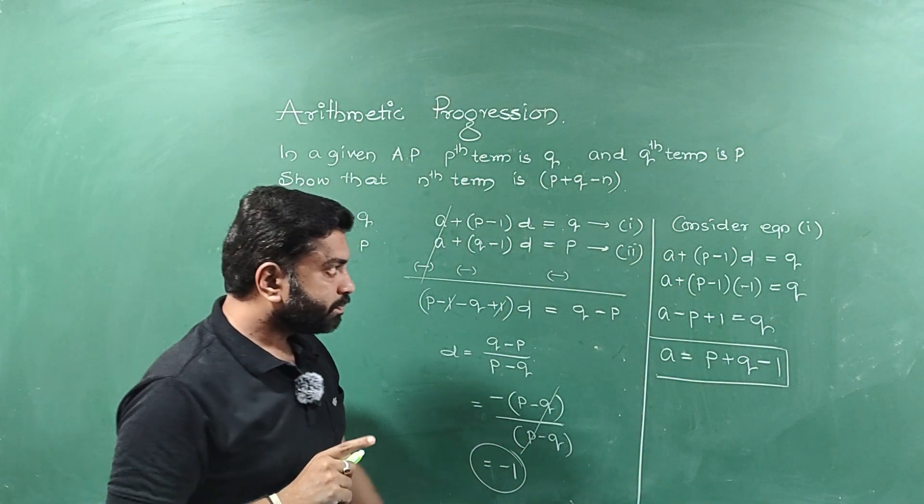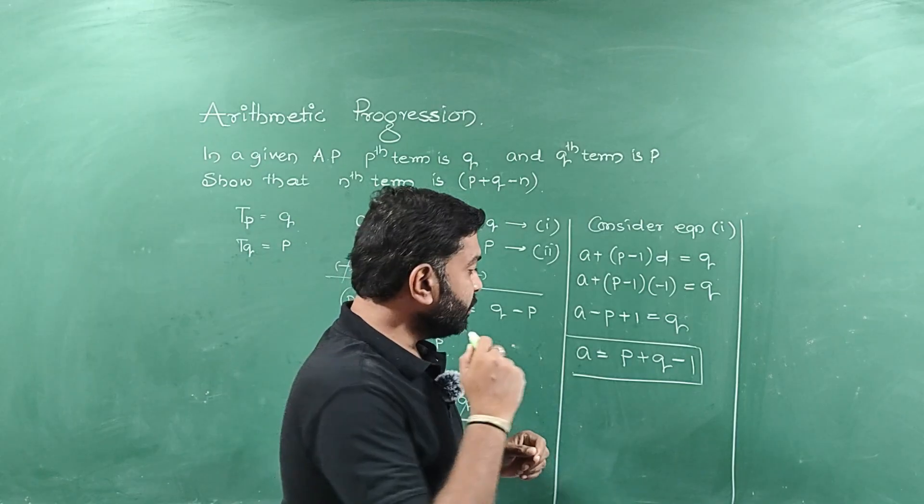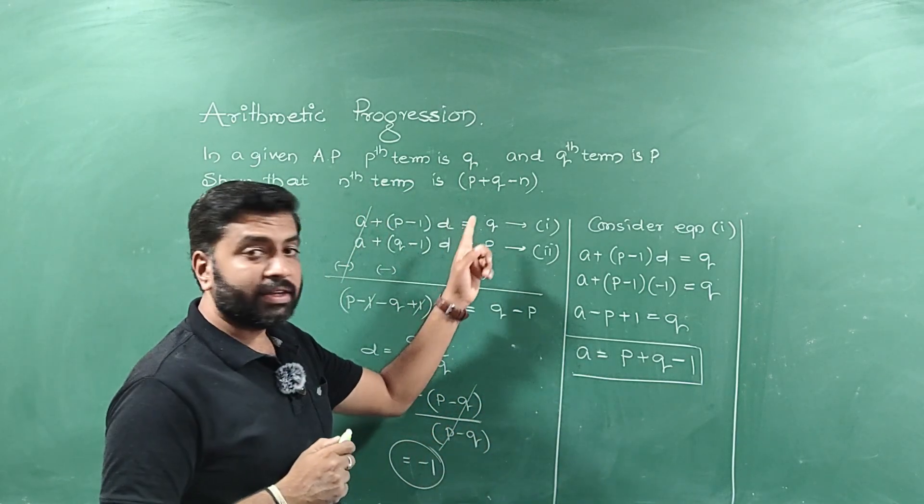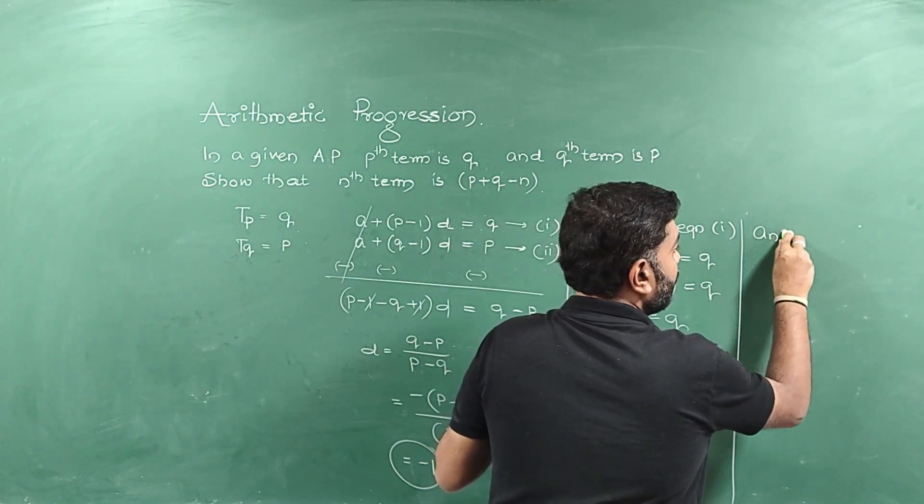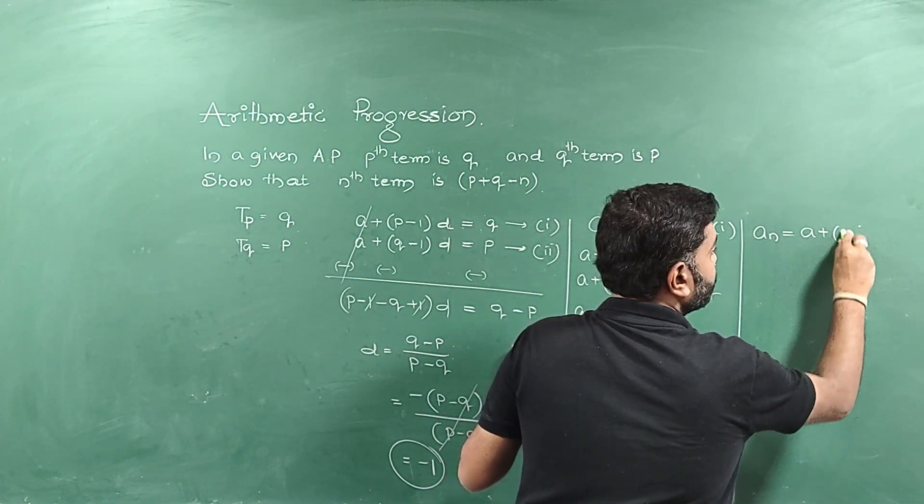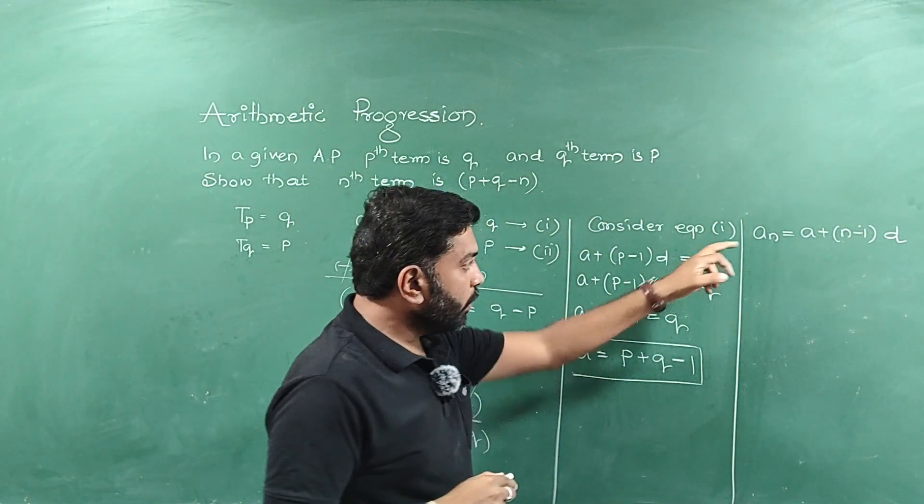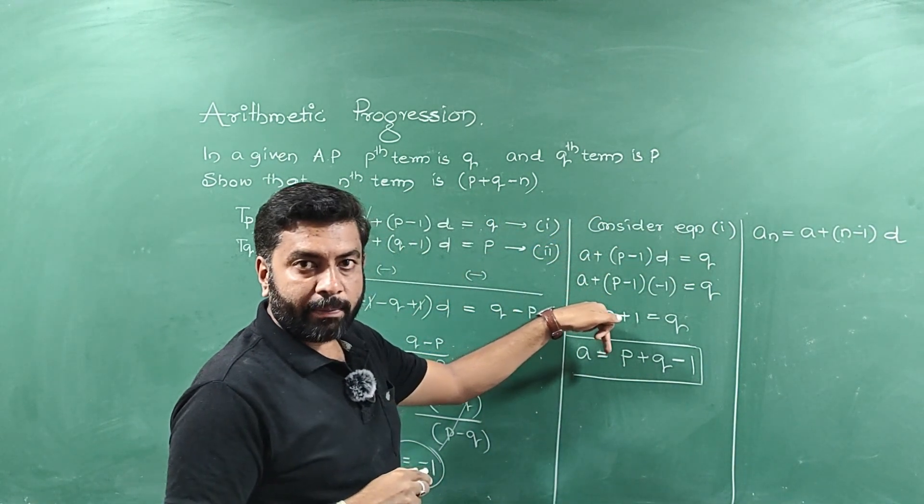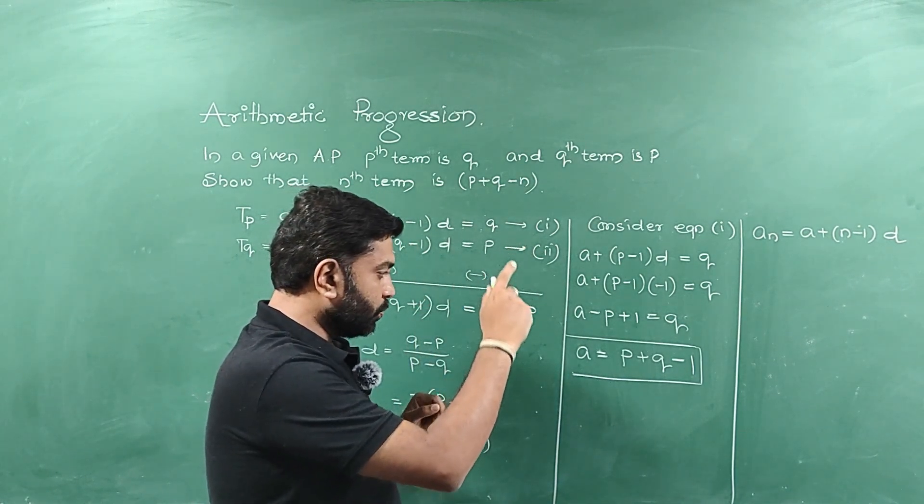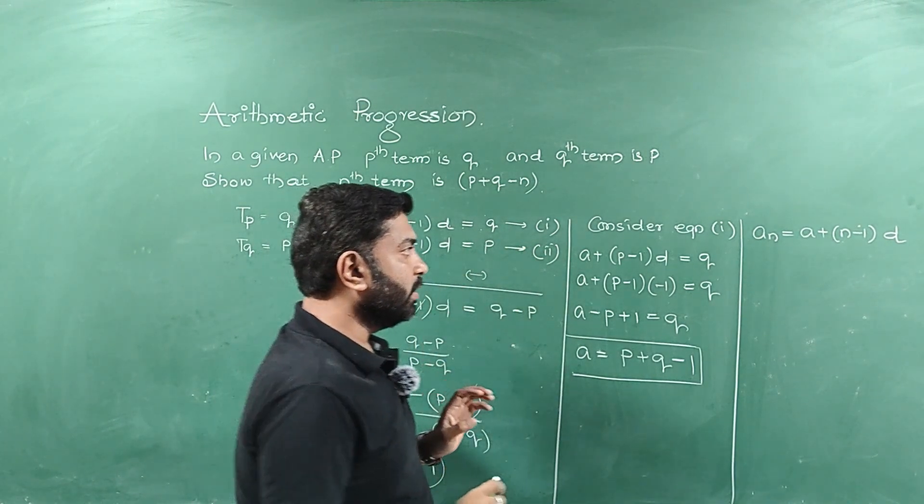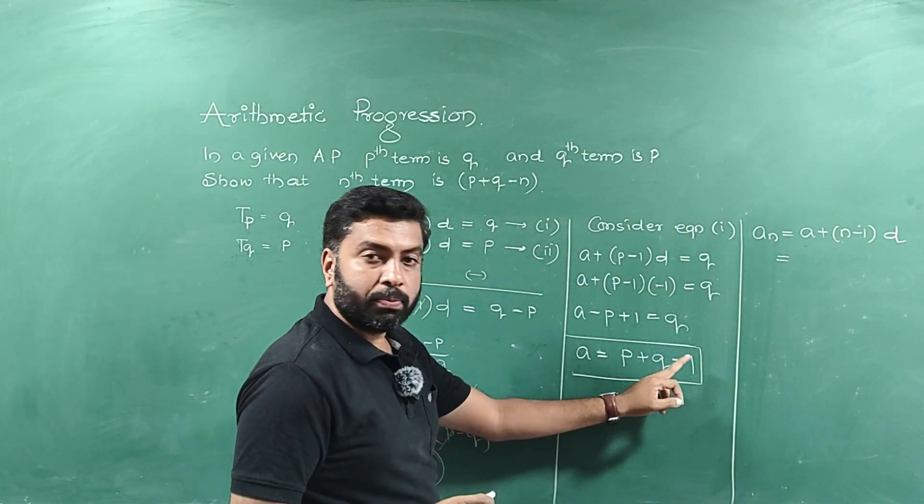Now I got A value and D value. As we know the formula for nth term of an AP is A plus n minus 1 D. So we already calculated the value of A and D. Let us substitute the value of A and D in the equation. So the A value is P plus Q minus 1.